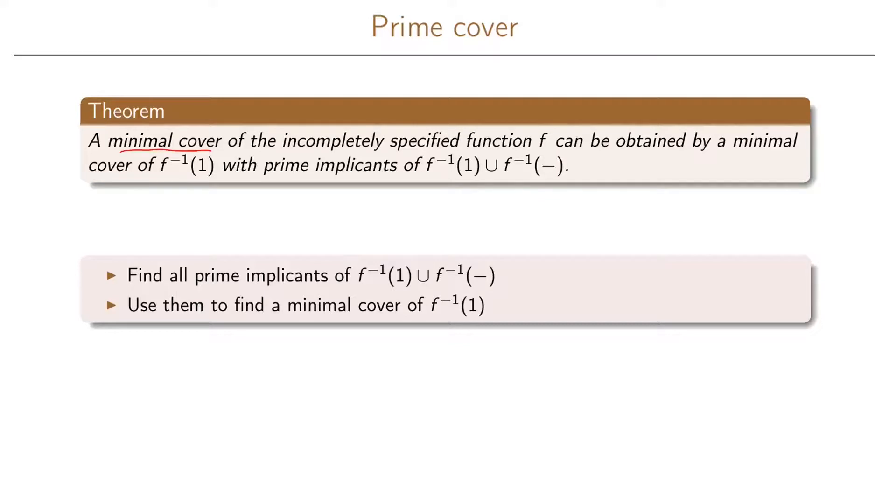A minimal cover of the incompletely specified function f, and this is a function that also includes the don't care set, this minimal cover can be obtained by a minimal cover of the onset of f together with prime implicants of the union of the onset and the don't care set.